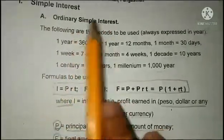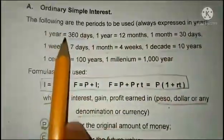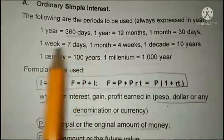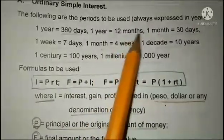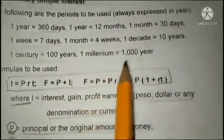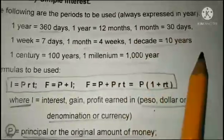For ordinary simple interest, the following periods are to be used, always expressed in years: one year equals 360 days, one week equals 7 days, one month equals 30 days, one month equals 4 weeks, one year equals 12 months, one decade equals 10 years, one century equals 100 years, one millennium equals 1,000 years.